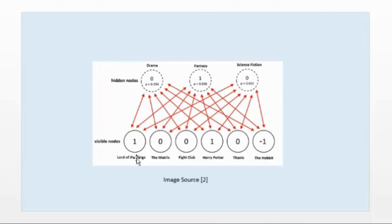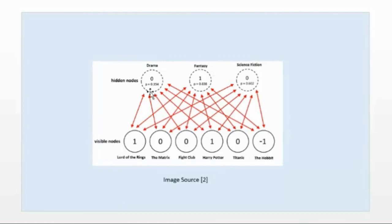The RBM computes from the visible inputs. For example, from Lord of the Rings with values one, zero, zero, one, zero, minus one — each value is multiplied by the weight and added with a bias value, then passed through the activation function. Suppose it gives zero for drama, one for fantasy, and zero for science fiction. Then we compute the probability of drama given the visible nodes, P(h|v).